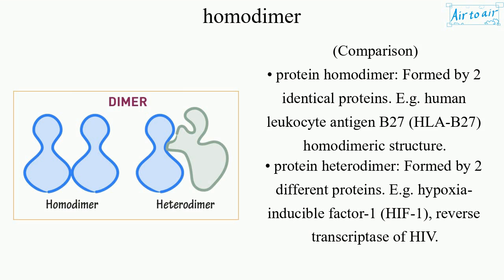Protein HETERODIMER: formed by two different proteins, e.g., hypoxia-inducible factor 1 (HIF-1), reverse transcriptase of HIV.